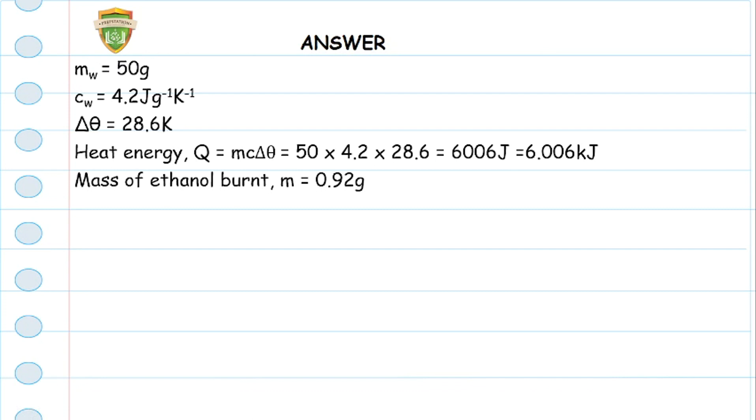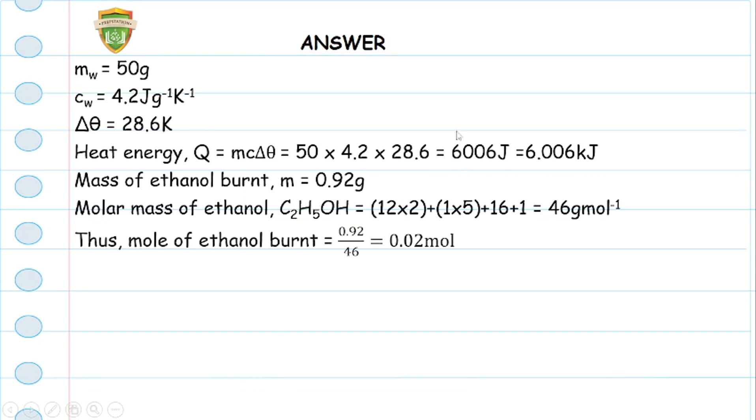The next thing we do: the question shows the mass of ethanol burned was 0.92 grams. To get the molar mass we add each of the atomic masses of the components. Carbon is 12 multiplied by 2, hydrogen is 1 multiplied by 5, there's 16 and 1, which gives us the molar mass of 46 grams per mole. The formula for mole is mass over molar mass, so that would be 0.92 over 46. That means the mole of ethanol that was burned was 0.02 moles.